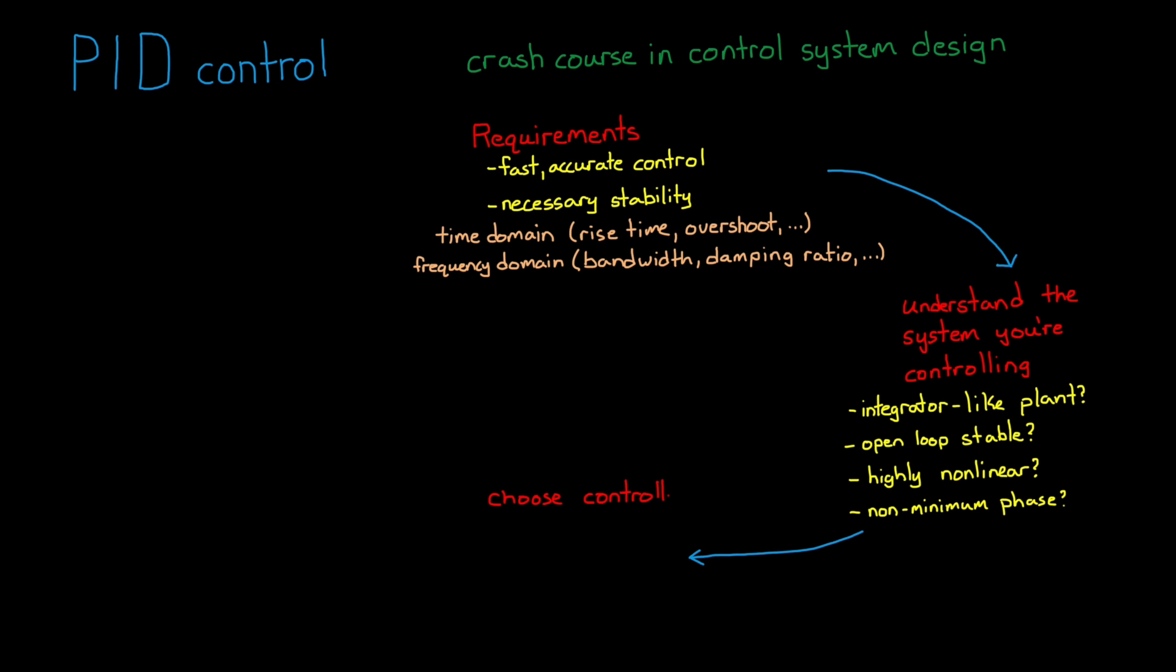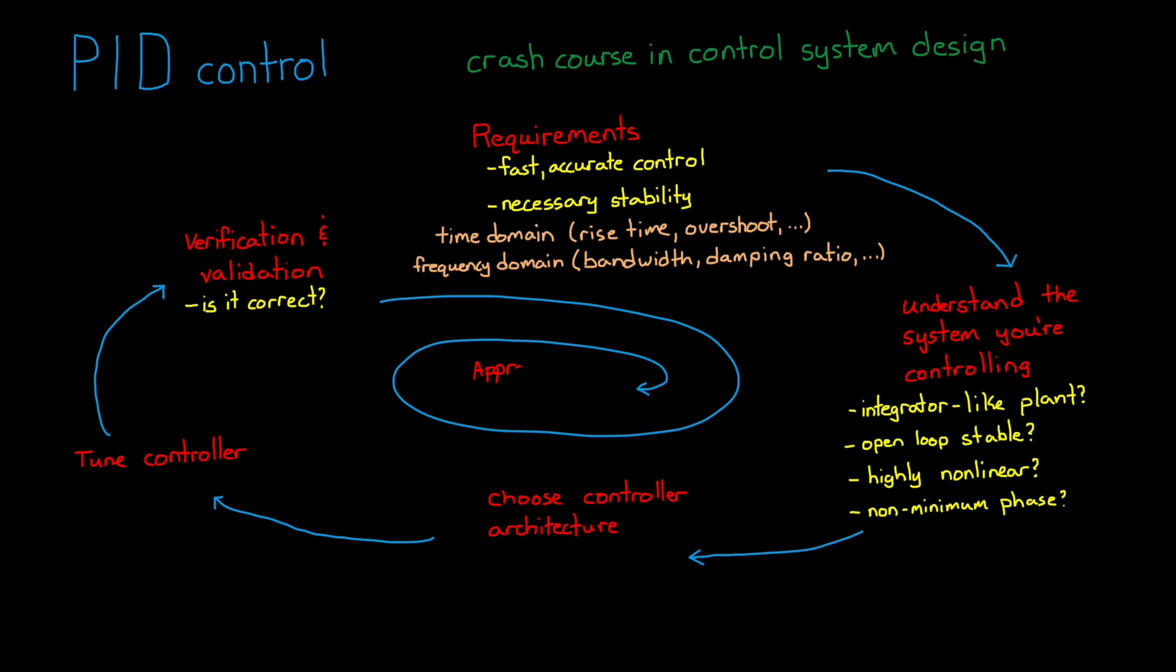Now at this point you have enough information to start an initial design and tune your controller. And once you think you have a suitable set of gains, you go through the process of verification and validation to determine if the system is what you wanted it to be. Here you might find that the controller and gains you chose don't actually meet the requirements. Or you might find that you don't have the correct requirements in the first place and you circle back around and make adjustments and eventually spiral in on an appropriate design.